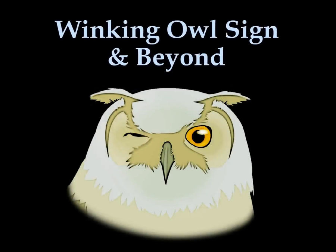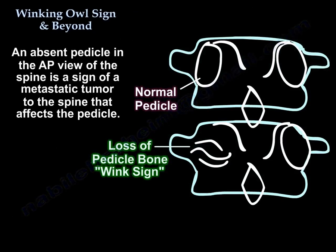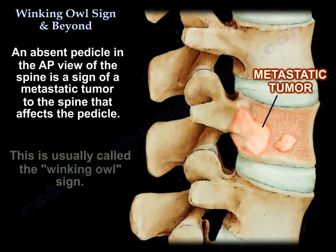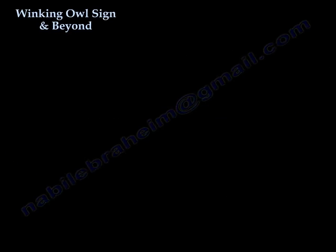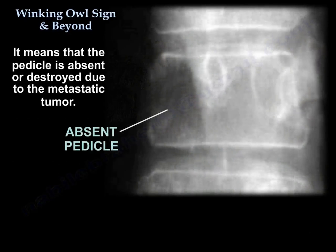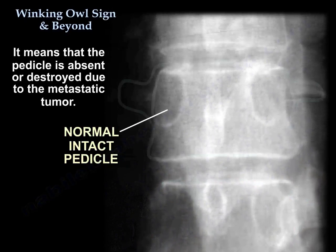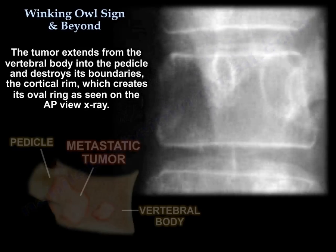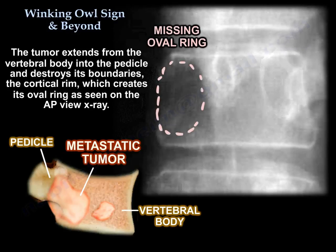Absent pedicle in the AP view of the spine is a sign of a metastatic tumor to the spine that affects the pedicle, and it is usually called the Winking Owl Sign. It means the pedicle is absent or destroyed from the metastatic tumor. The tumor extends from the vertebral body into the pedicle and destroys its boundaries — the cortical rim — which creates its oval ring as seen on the AP view.